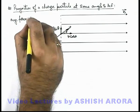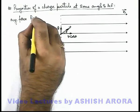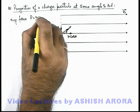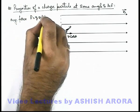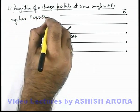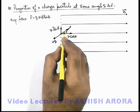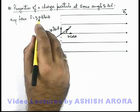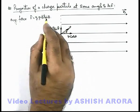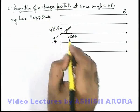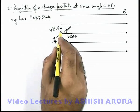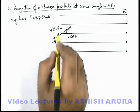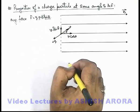The magnetic force on the charged particle will be qvB sin theta, as theta is the angle between the two. So here we can write: it is due to the component v sin theta that the particle is experiencing the magnetic force.